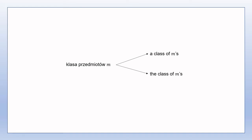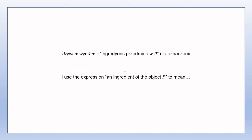I haven't translated word for word. I've tried to use the language and sentence structure that I would expect to find in an equivalent work in English. Therefore, sometimes Leśniewski uses the active voice, which I've translated into the passive voice. For example, Leśniewski says 'Używam wyrażenie ingrediens przedmiotów P w znaczeniu' — which would translate word for word as 'I use the expression an ingredient of the object P to mean' — but which I've translated as 'the expression an ingredient of the object P is used to mean'. There are other examples where the word-for-word translation into English sounds cumbersome and unnatural, even though the Polish wording is perfectly natural.